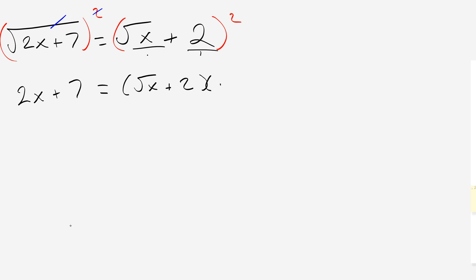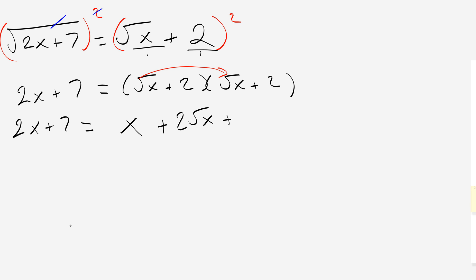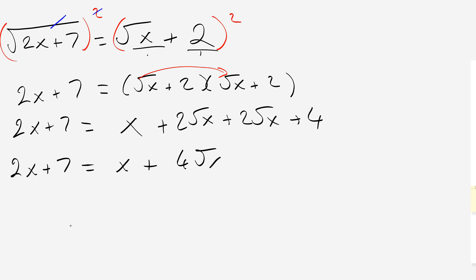What we really need to do is square the whole side: root x plus 2 multiplied by itself. So on the left-hand side we still have 2x plus 7. On the right-hand side, expanding: root x times root x gives x; root x times 2 gives 2 root x; 2 times root x gives another 2 root x; and 2 times 2 gives 4. So we have 2x plus 7 equals x plus 4 root x plus 4. We've squared both sides, but we still have a square root term remaining.